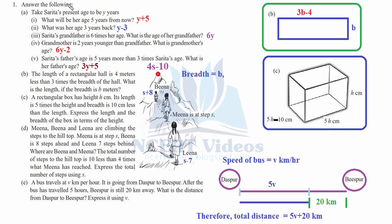Question 1, answer the following. Part a: take Sarita's present age to be y years. What will be her age 5 years from now? Currently she is at y, and after 5 years she'll be y plus 5. It is very easy.